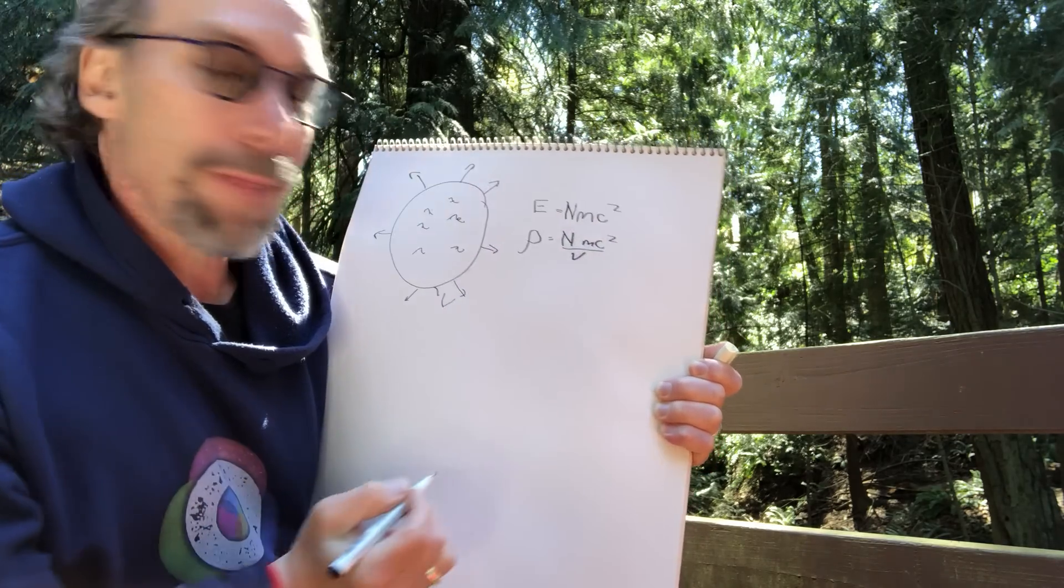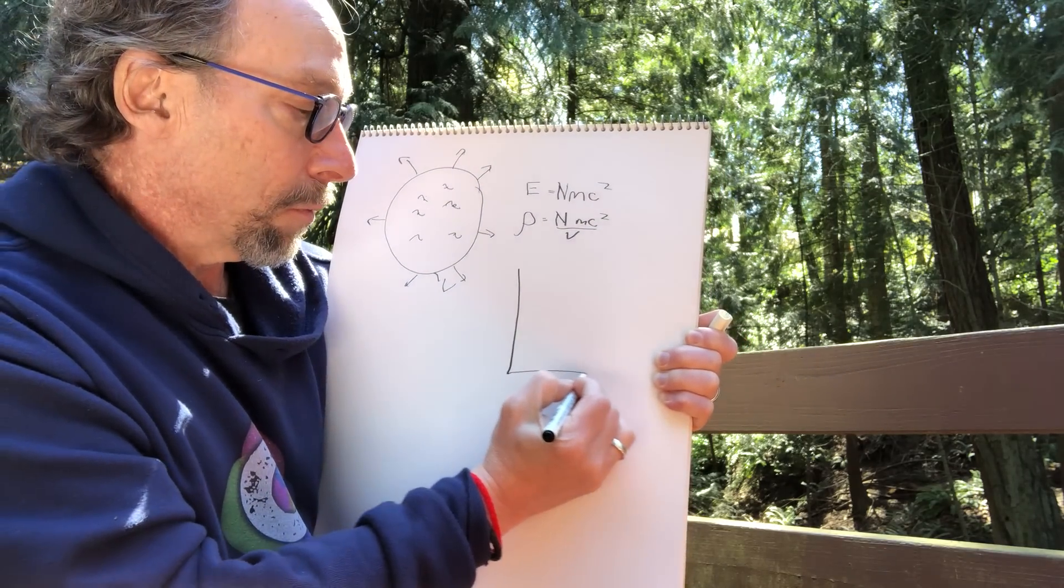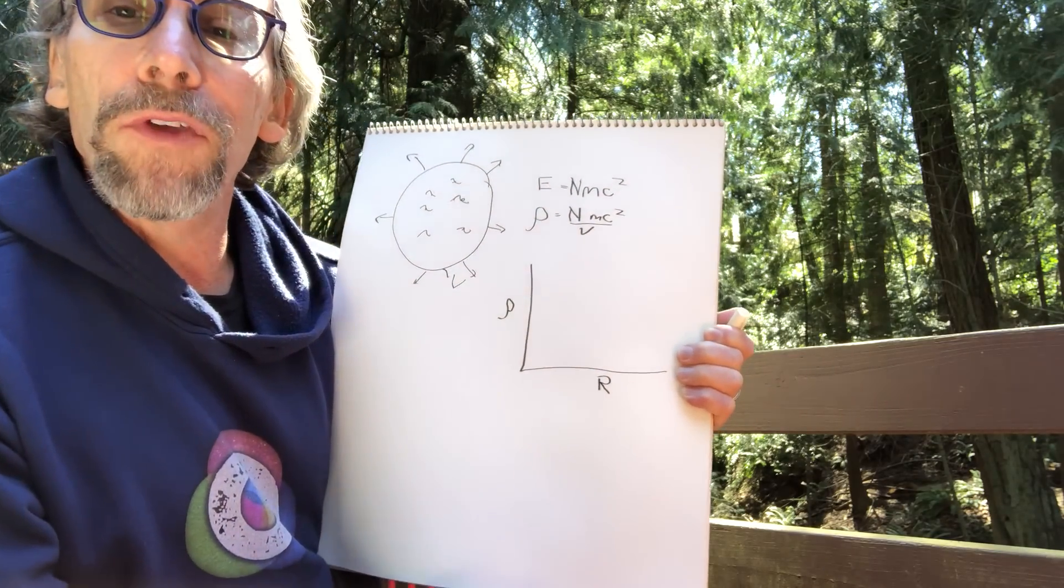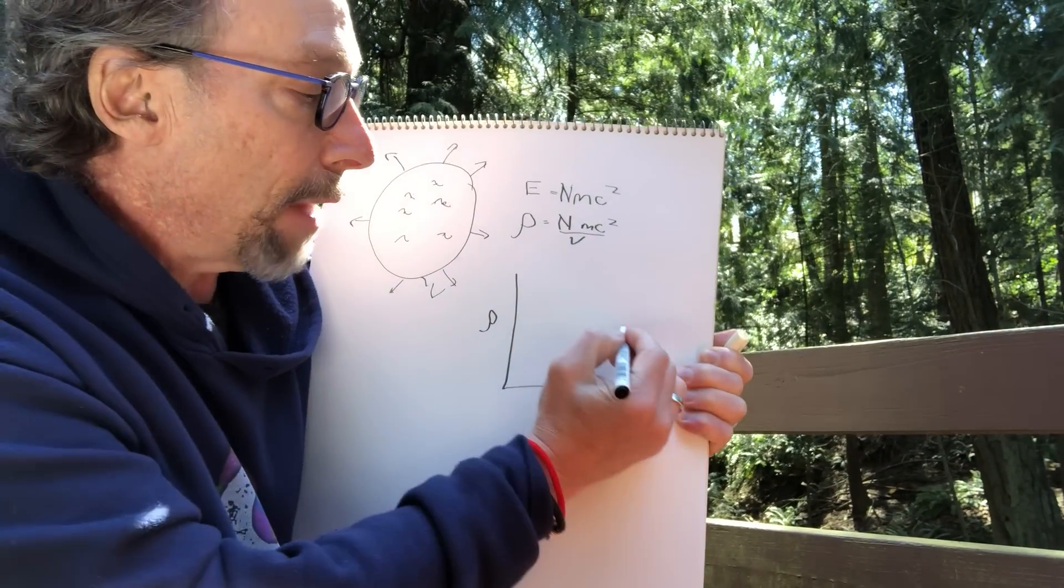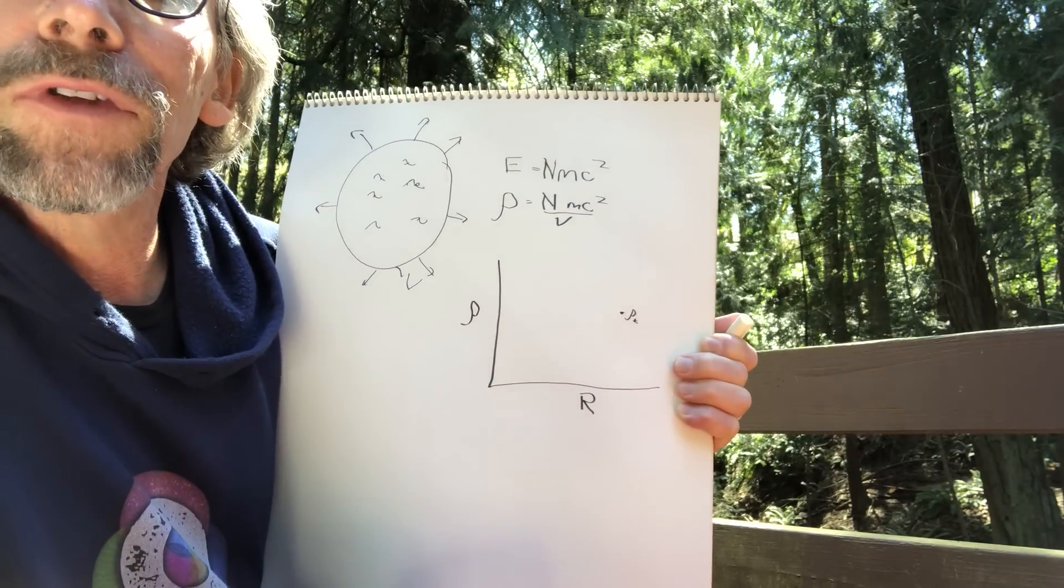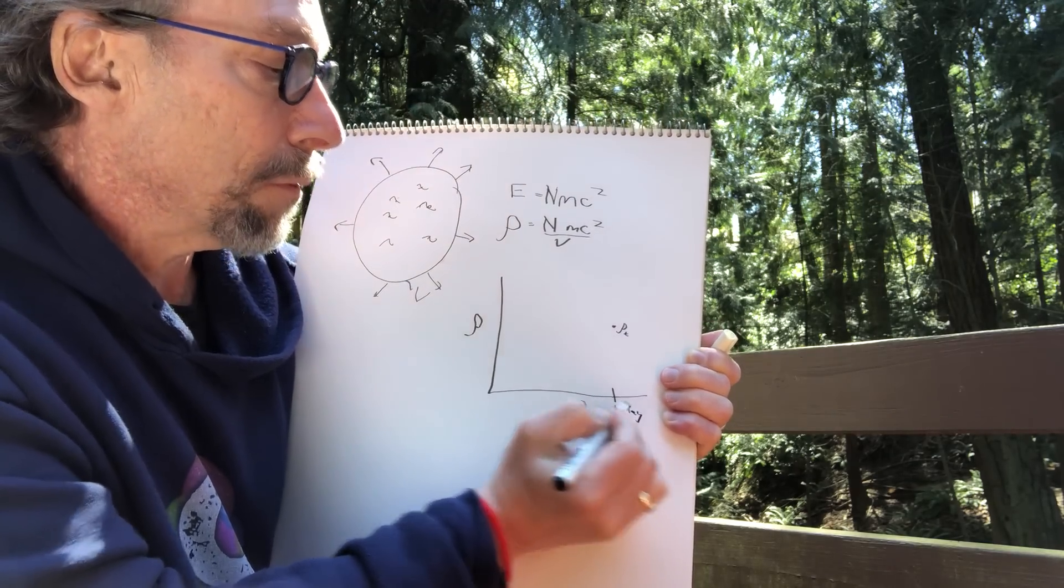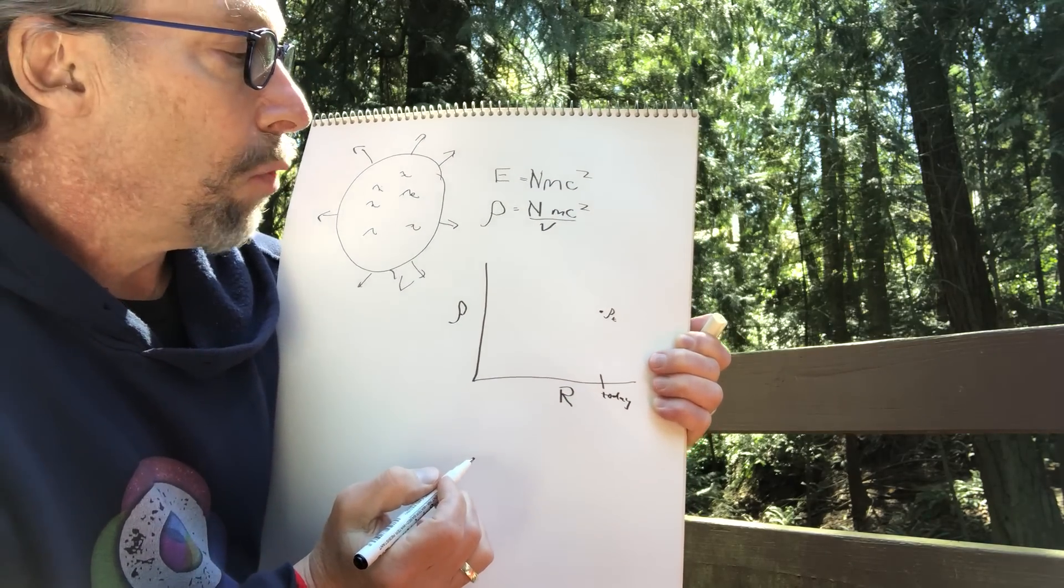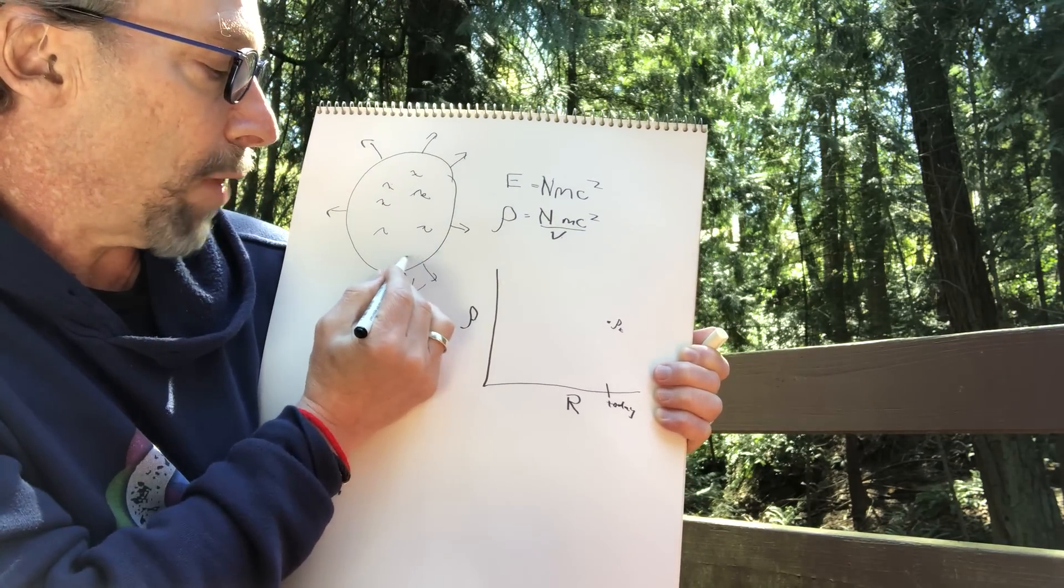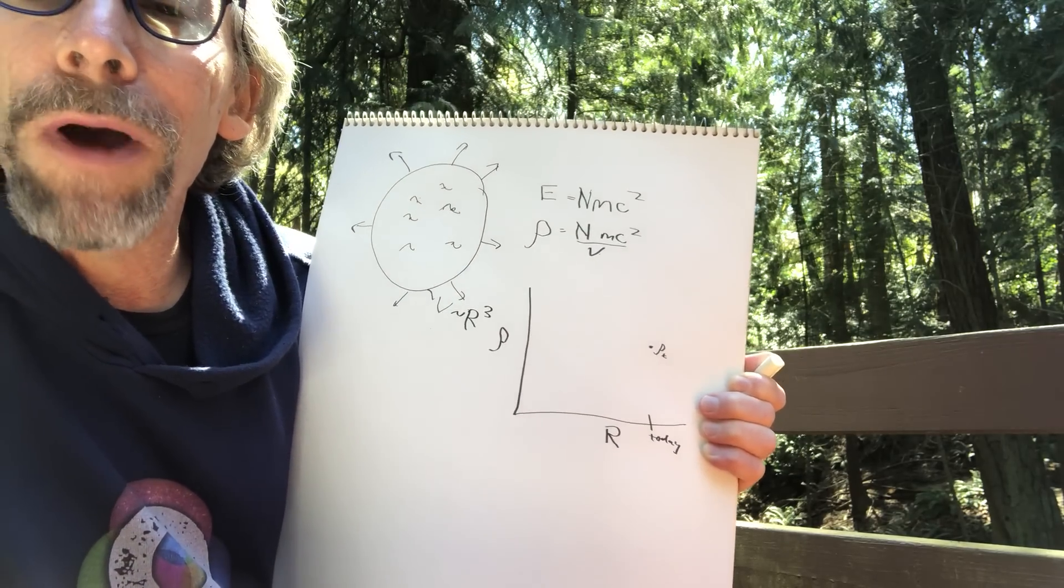Let's draw a curve which is the energy density of matter as a function of the size of the universe. There's some number now—the energy density of matter today, we'll call that some number. What did it do over time? The volume of any spherical region of radius r is proportional to the cube of the radius.